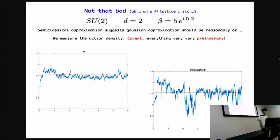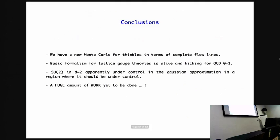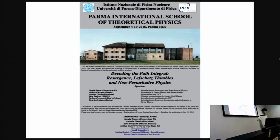So conclusion, well basically, is that there is still a huge amount to be done. In any case, we have now a Monte Carlo for thimbles in terms of complete flow lines. We have at least one case in which we can deal with SU(3) and we take into account different thimbles to correctly reproduce results and we also have performed a few steps in the direction of real space-time. Let me end with this.